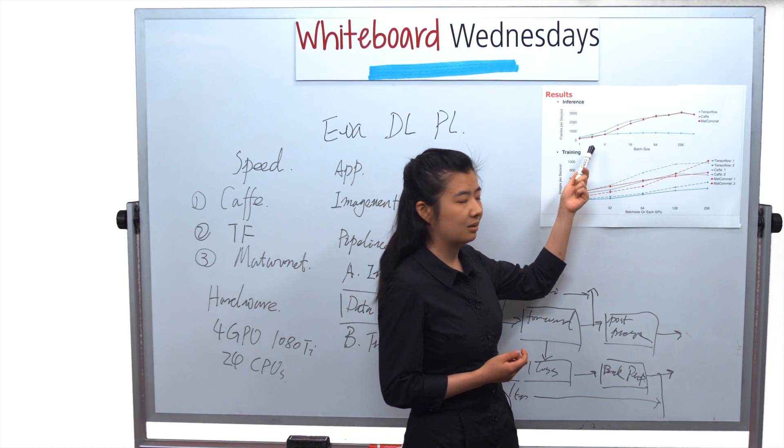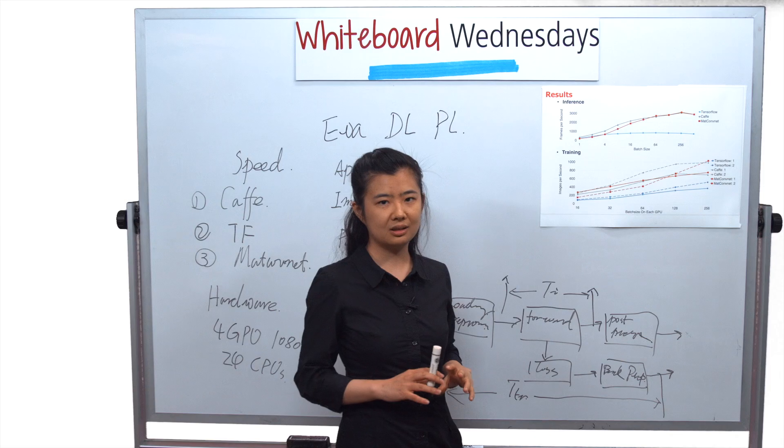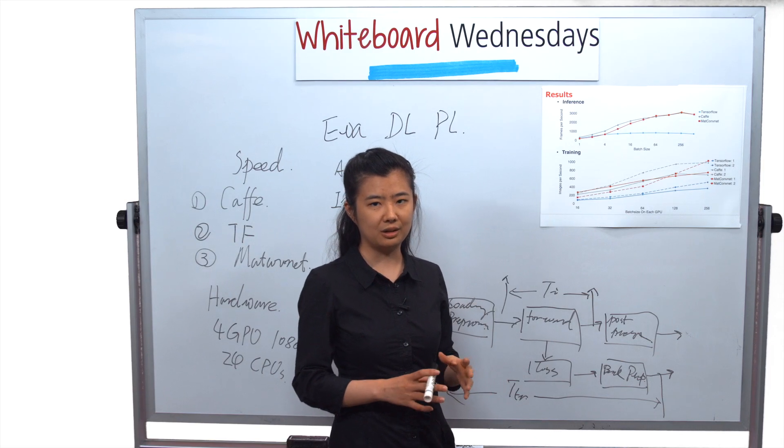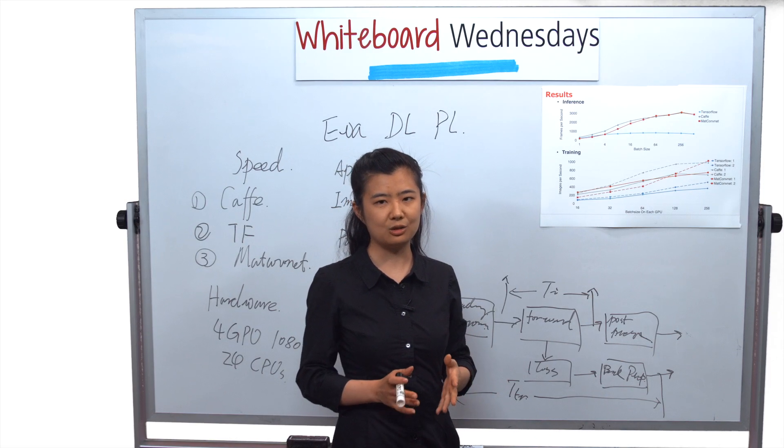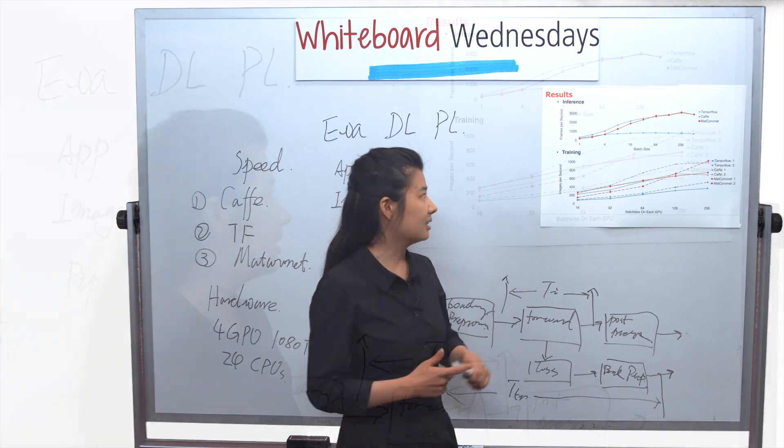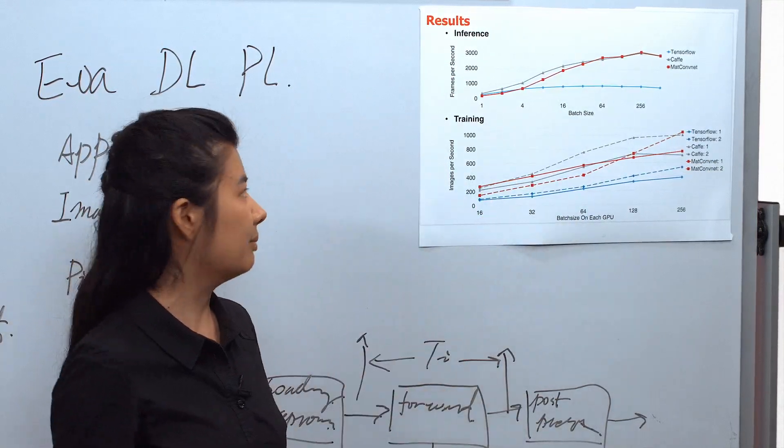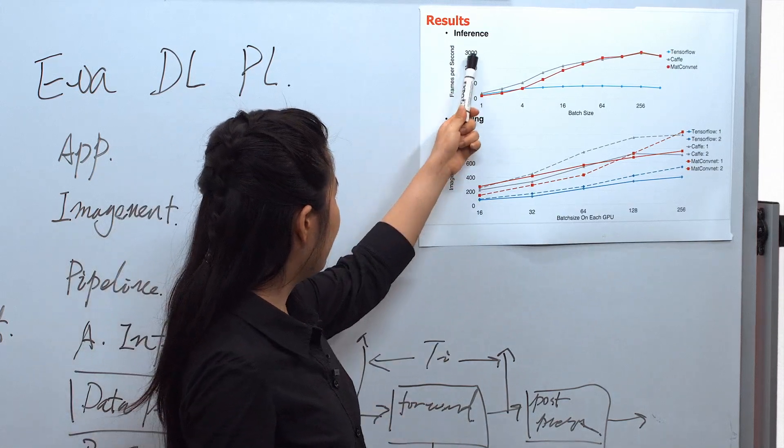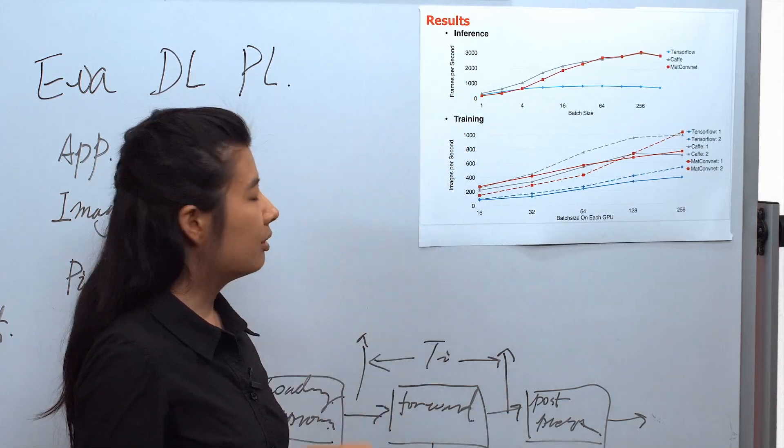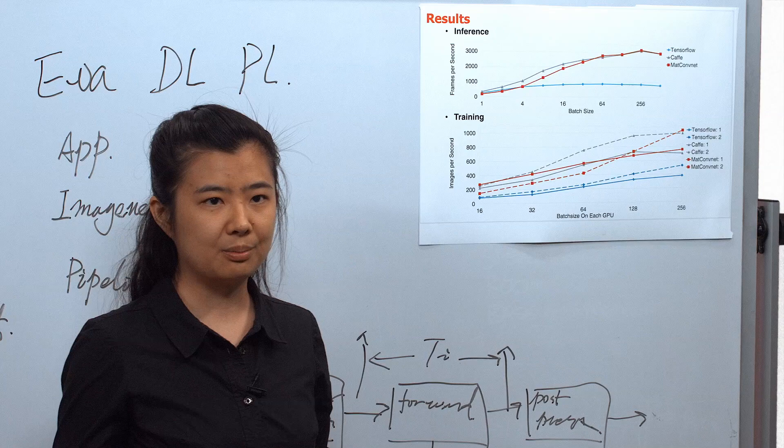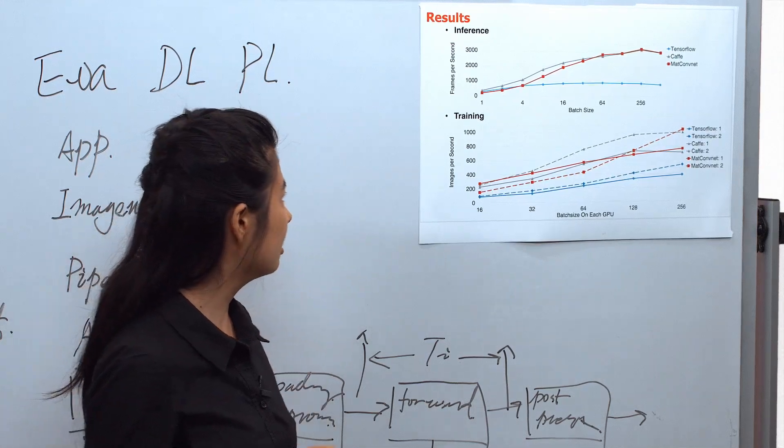In the processing you cannot feed all the data into memory, so what we usually do is split it into batches. This is how many images each batch contains. The y-axis is the number of images that can be processed per second.